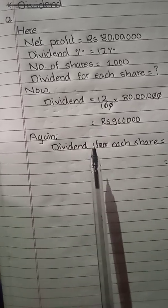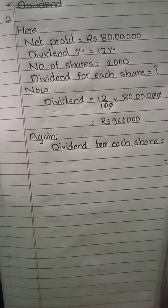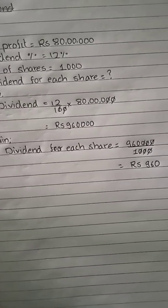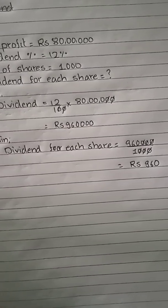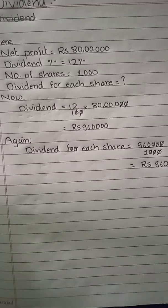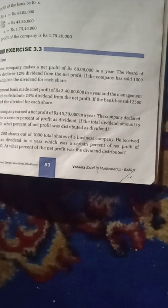Next, question two: A development bank made a net profit of Rs. 2 crore 40 lakhs in a year. The management announced to distribute 20% dividend from the net profit. If the bank has sold 2,500 shares, find the dividend for each share.